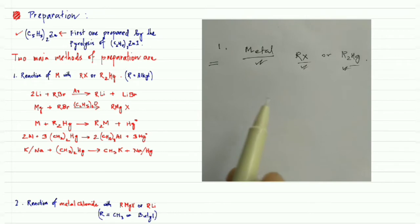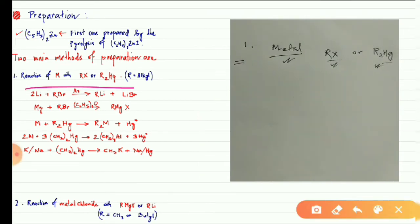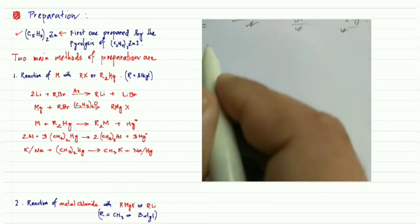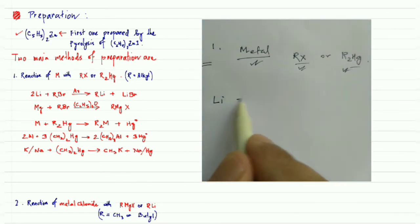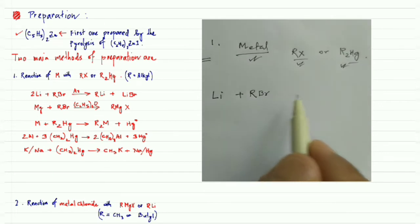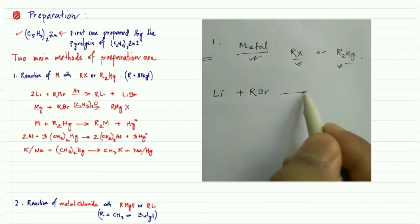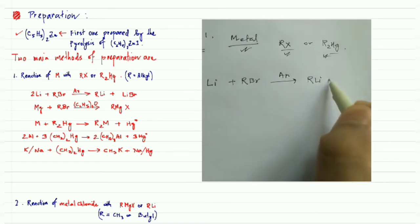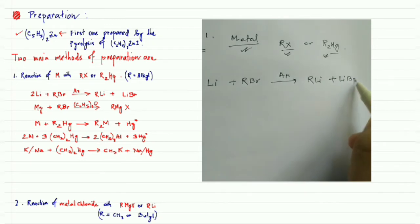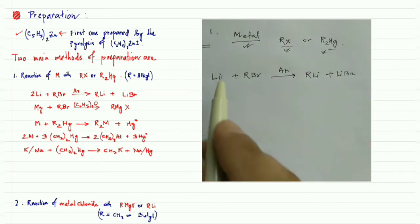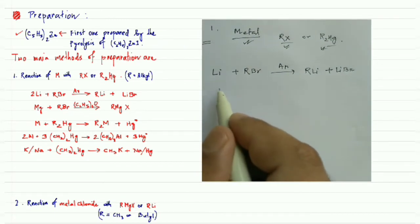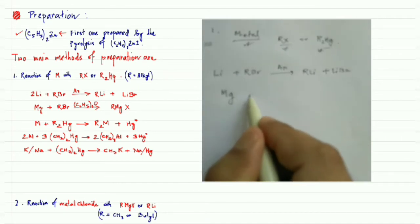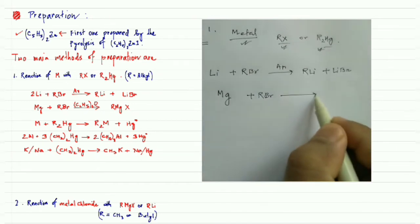For the first method, one example is the reaction of lithium with ethyl bromide — that is, alkyl bromide — in the presence of argon. This gives the lithium organometallic compound and lithium bromide. Similarly, an active metal such as magnesium can also react with an alkyl bromide.